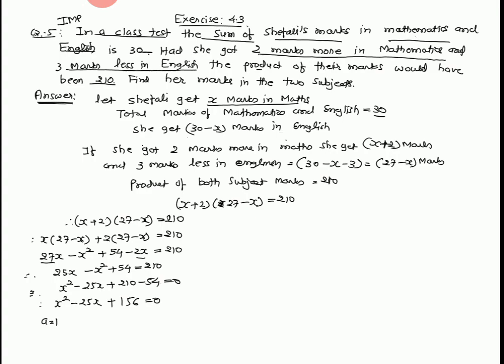A equal to 1, B equal to minus 25, C equal to 156. x squared is compared with x squared plus Bx plus C. B squared minus 4ac: minus 25 whole square minus 4 into 1 into 625 minus 624.